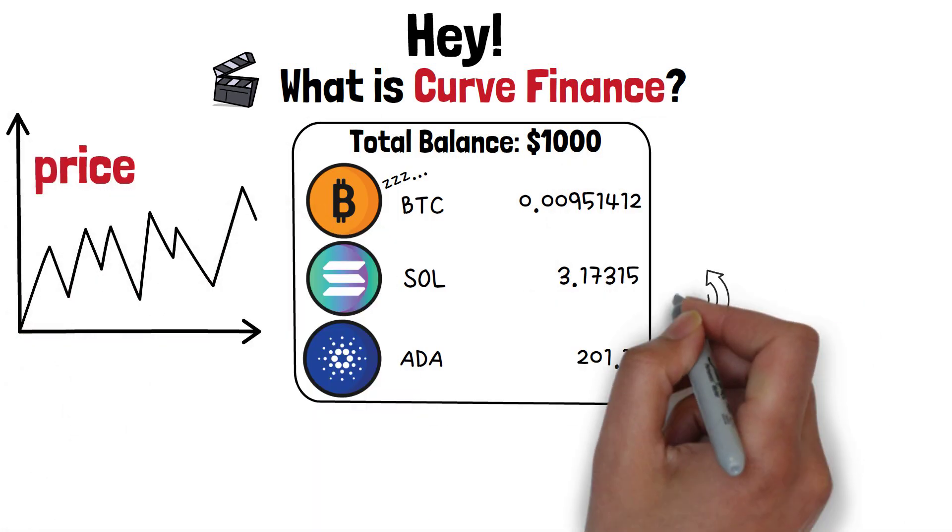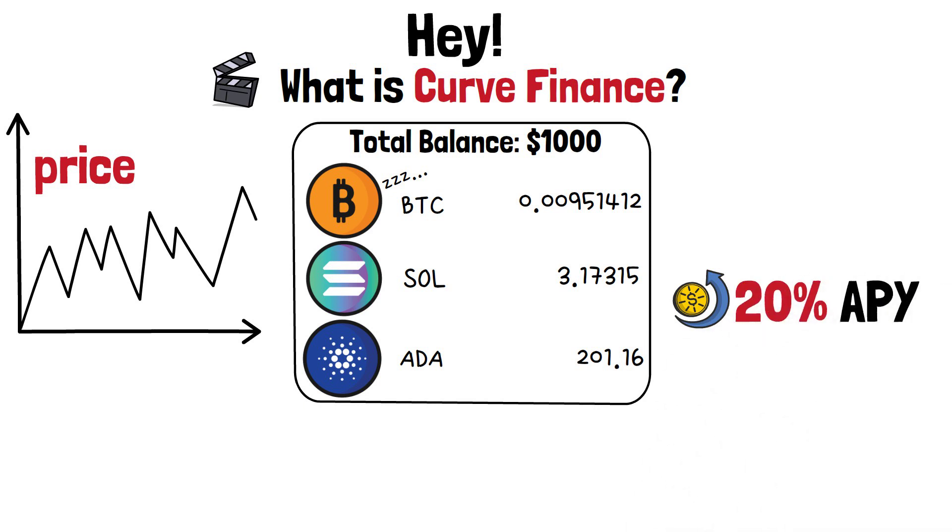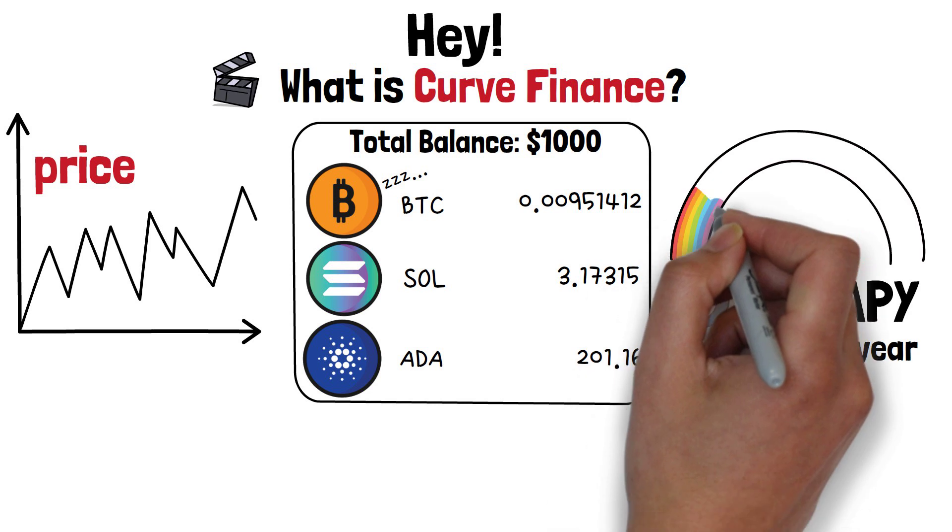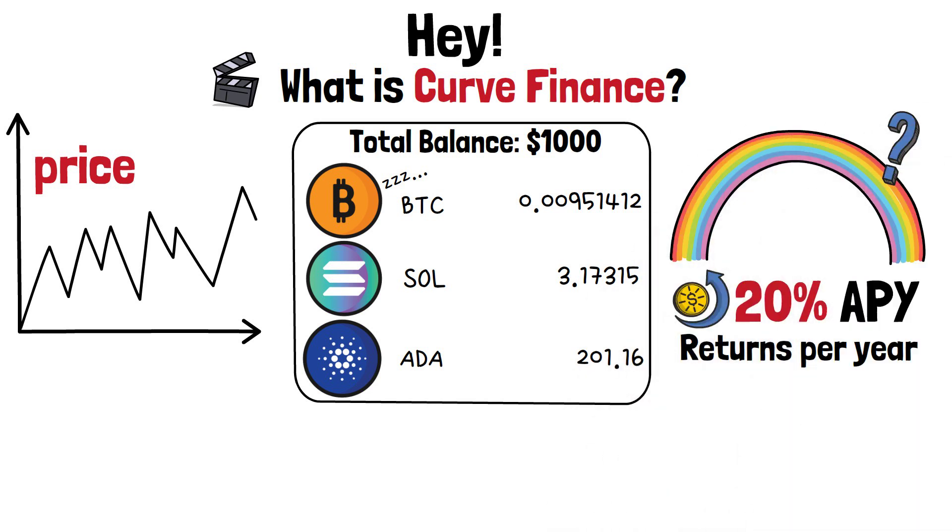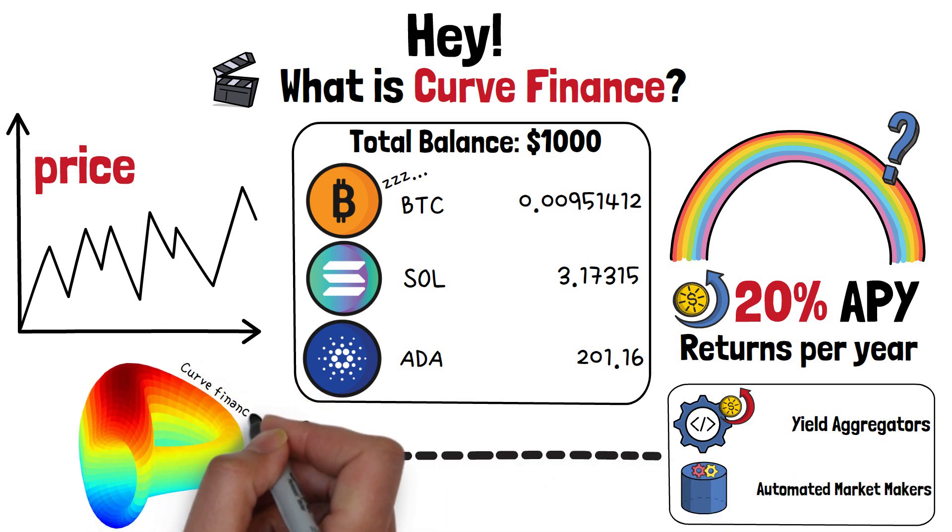Well, what if I told you that there is a way to earn up to and over 20% APY, or simply returns per year, on that crypto? Sounds too good to be true? Well, this can be done with the magic of yield aggregators and automated market makers. One of the most popular of such platforms is Curve Finance.